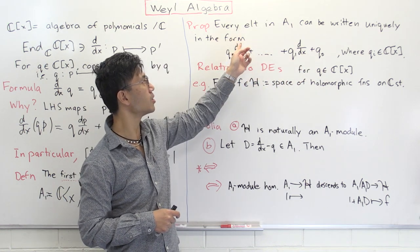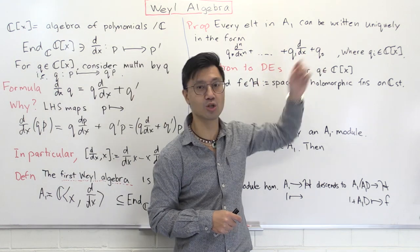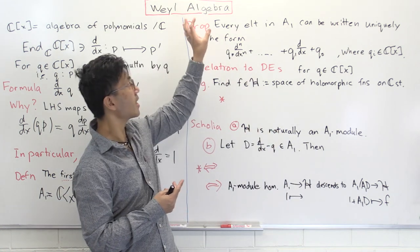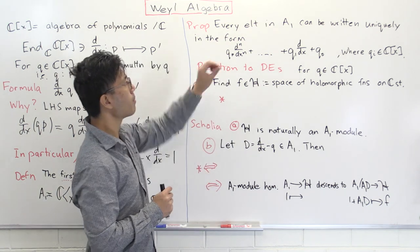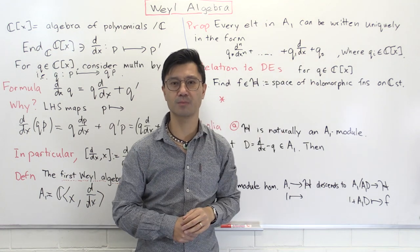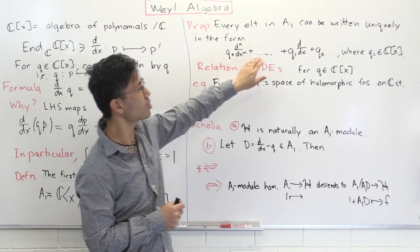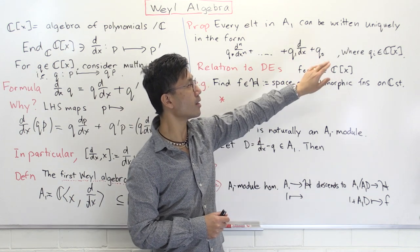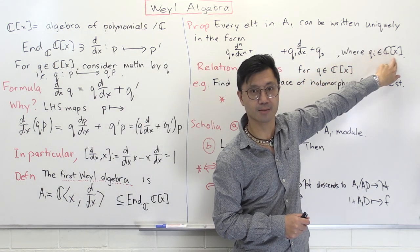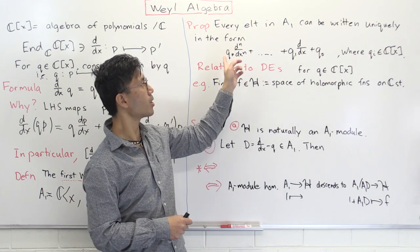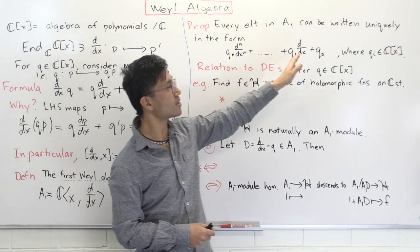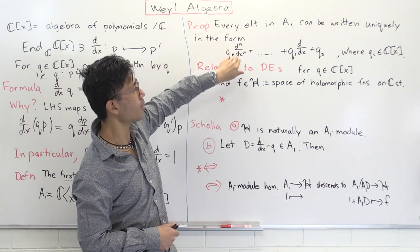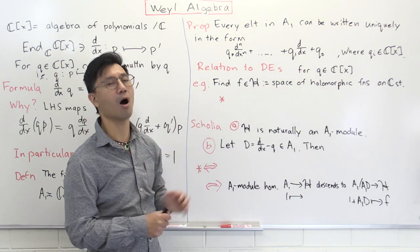So we have q_n · (d^n/dx^n) plus all the way down to q_1 · d/dx plus q_0, and this is certainly an element inside the first Weyl algebra. The proposition says that any element inside the first Weyl algebra can be written essentially uniquely in this form. One way to think about this is as a polynomial in d/dx whose coefficients lie inside the polynomial ring in x. Since these polynomials don't commute with the derivative operators, we choose the convention that coefficients are placed on the left.